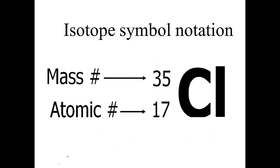This is a way to represent the symbols for an isotope. We're going to look more at isotopes. The atomic number is going to go in the bottom, whereas the mass number goes in the top.